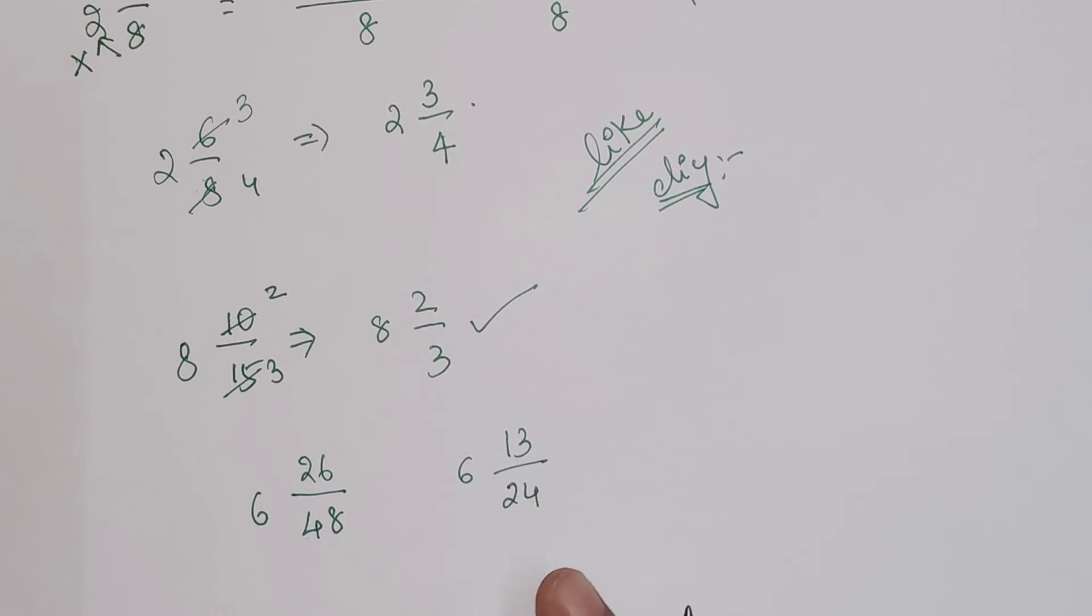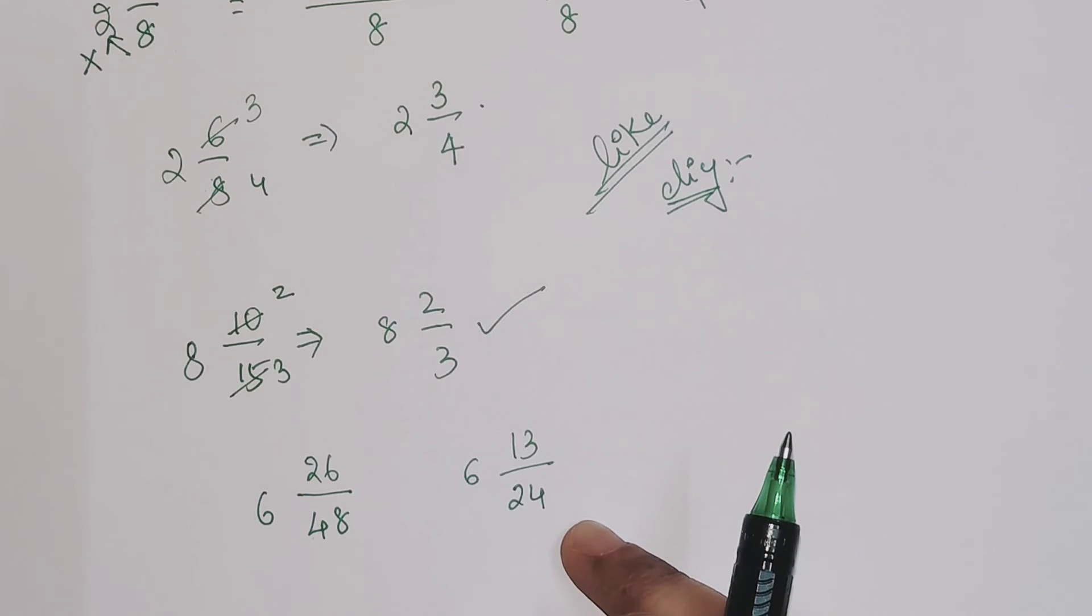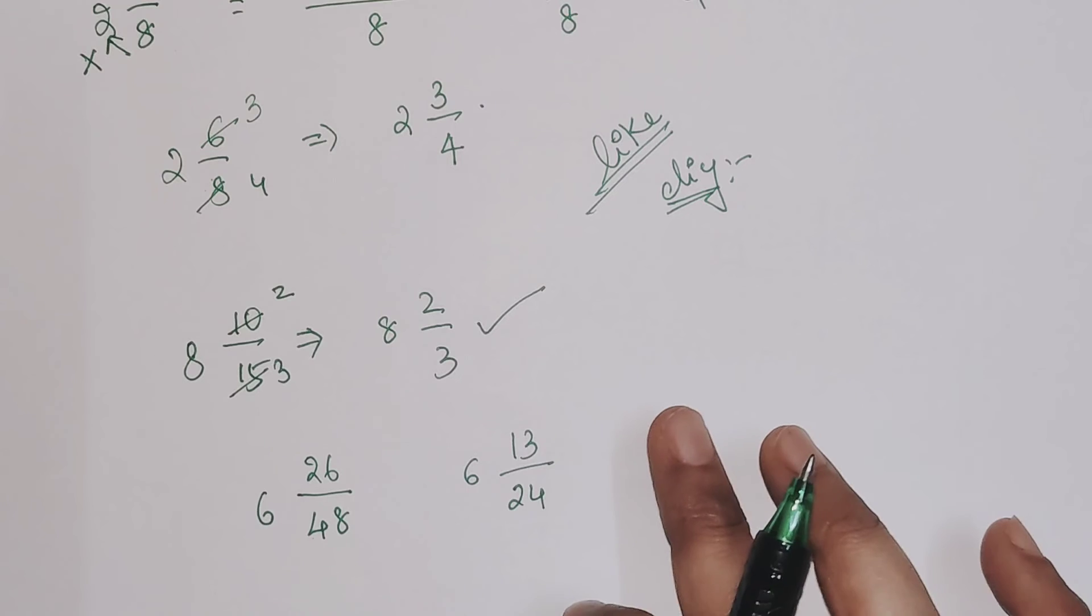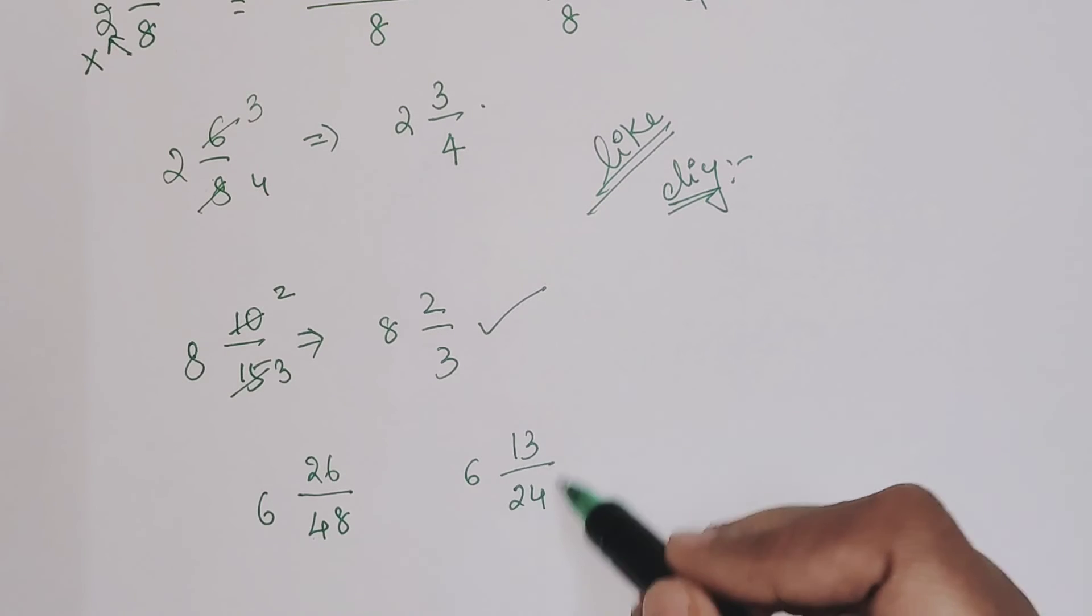Now please understand: always remember, whenever this particular fraction over here is not an improper fraction, only then your simplified form is fine. In case after simplifying you're getting an improper form, it means you have done some mistake.